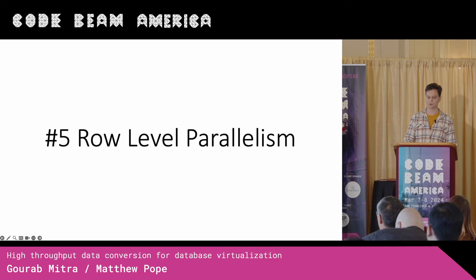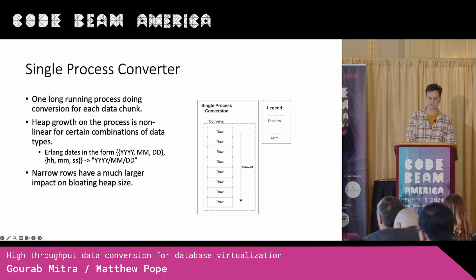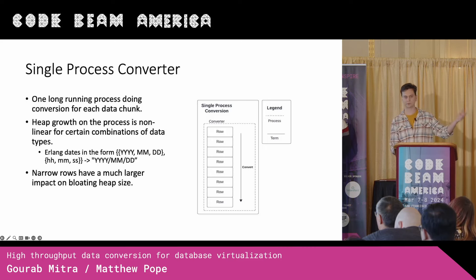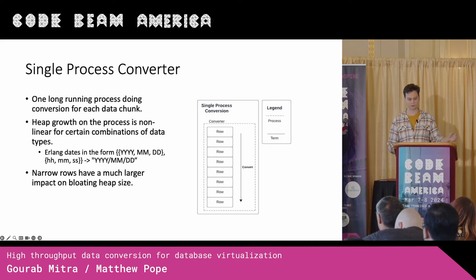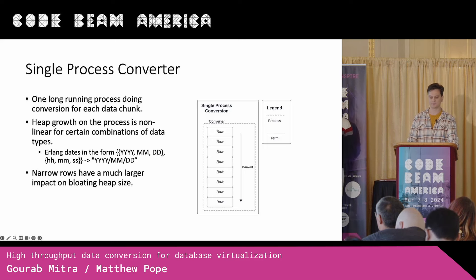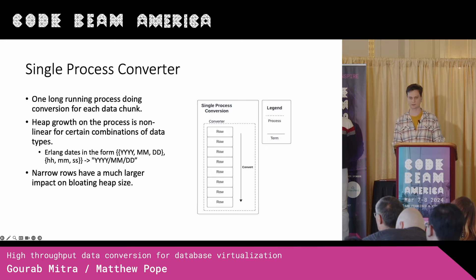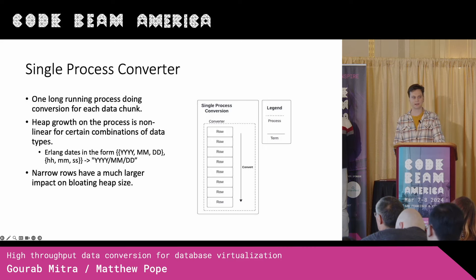The first of those is what we called row-level parallelism. As you can see in the diagram, we used to use one long-running process for converting each of these data chunks that we fetch from the backend database. Each data chunk is composed of all the individual rows. We would serially run down this data chunk and call a conversion function on each of these rows. Since Erlang is an immutable language, it creates many transient new terms instead of modifying them. Our result conversion created many transient terms and generated lots of garbage. We further noticed that heap growth was nonlinear for some data types.